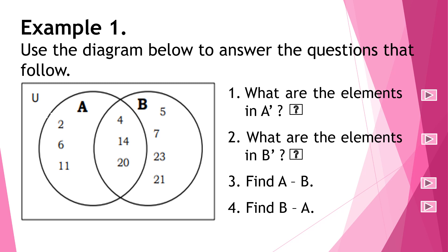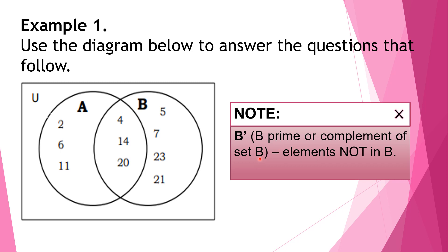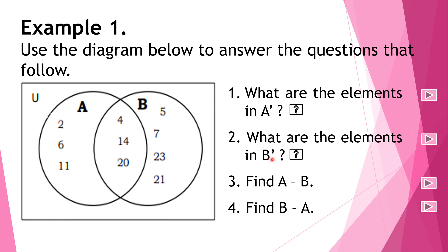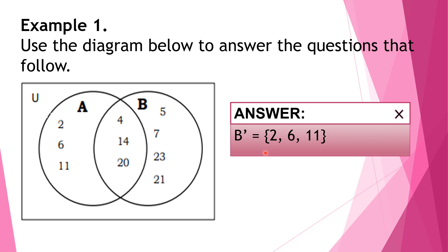Let us now answer example number 2: what are the elements in B prime? If earlier A prime referred to elements not in A, when we say B prime — or complement of set B — those are the elements not in set B. Looking at the given Venn diagram, the elements not in B are: B prime is equal to 2, 6, and 11, because 2, 6, and 11 are elements of A only.